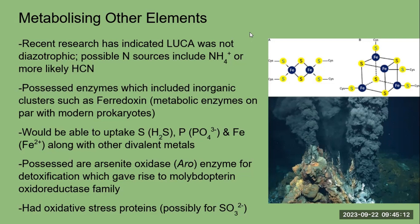LUCA likely would have taken up sulfur as hydrogen sulfide, phosphorus as orthophosphate, and iron as iron(II) in a manner similar to acetogens. Living in a hydrothermal system, LUCA would have had to cope with toxic chemicals emitted from the vent. It possessed an arsenite oxidase gene, which was likely used to convert arsenite into the less reactive arsenate, and this was the ancestor of the diverse molybdopterin oxidoreductase enzyme family. LUCA also had oxidative stress proteins, and the source of oxidative stress was probably sulfite.